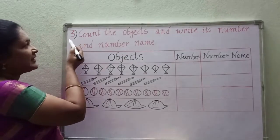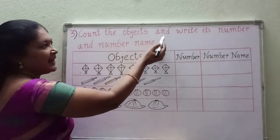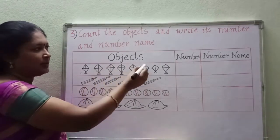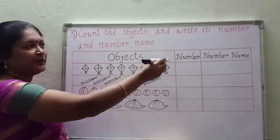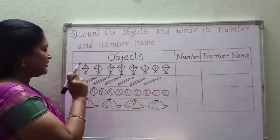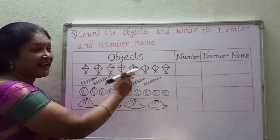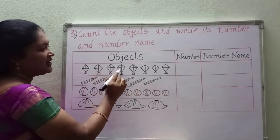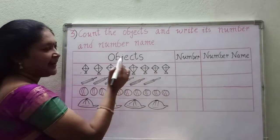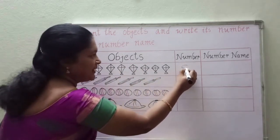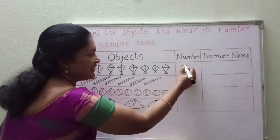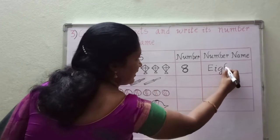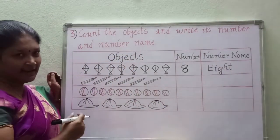Now the 3rd bit. Read the heading: Count the objects and write its number and number name. Here they gave some objects — you have to count all the objects and write the number and the number name, which means the spelling of that number. 1st one: what are these? Kites. How many kites are there? Let us count: 1, 2, 3, 4, 5, 6, 7, 8. 8 kites are there. So write the number 8. What is the spelling of 8 children? E-I-G-H-T.